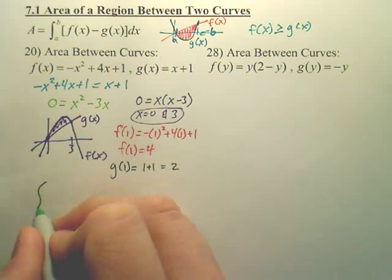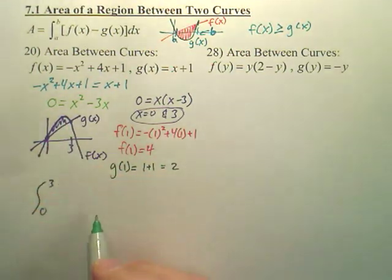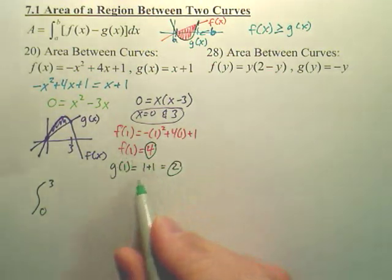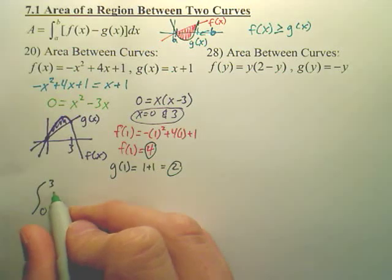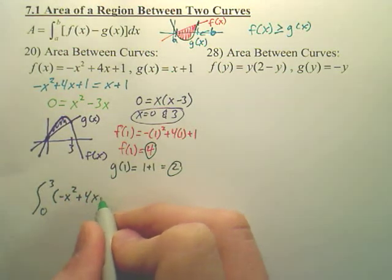So, what I do now is I make my integral from 0 to 3. That's where they hit. And according to these two numbers, I know f of x is above g of x, so I'm going to take f of x, which is negative x squared plus 4x plus 1.